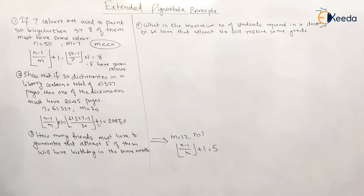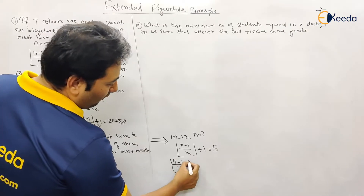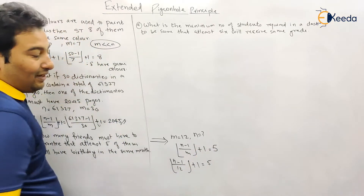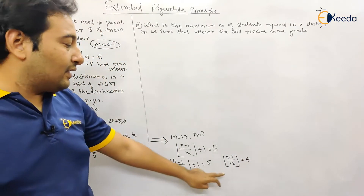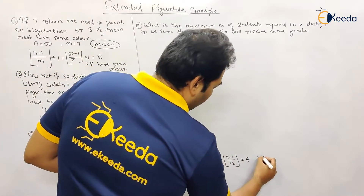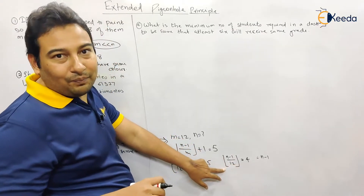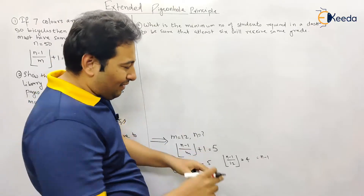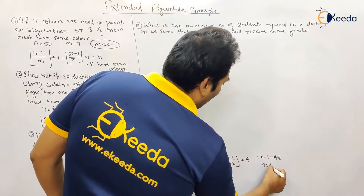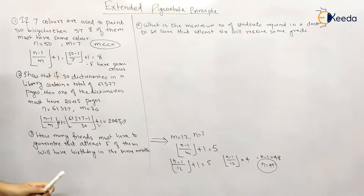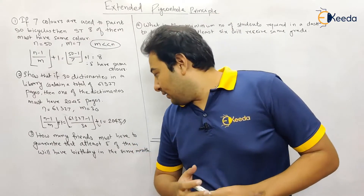Setting up: floor((n − 1) / 12) + 1 = 5, so floor((n − 1) / 12) = 4. Multiplying both sides by 12: n − 1 = 48. Since we multiplied by 12, the floor function is no longer needed. Therefore n = 49. If there are 49 friends, we can guarantee that at least five of them will have their birthday in the same month.